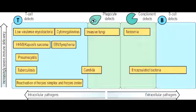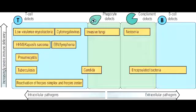Name the common viral infections seen with B-cell deficiency. B-cell deficiency can lead to viral infections such as enteroviral encephalitis and poliovirus. One thing to note is that in these patients, live vaccines are contraindicated, because a live attenuated vaccine may revert to a virulent or harmful form.